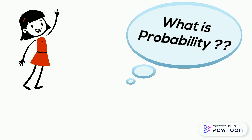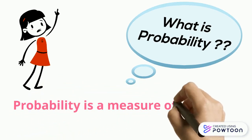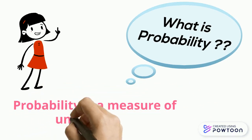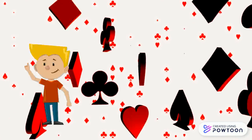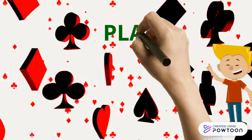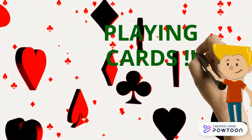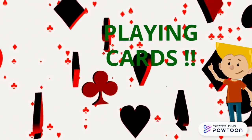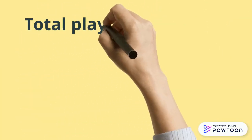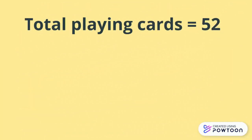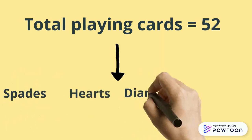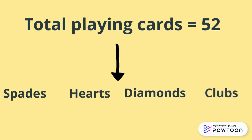Probability is a measure of uncertainty. Let us first understand the tricks related to playing cards. A deck of playing cards consists of 52 cards which are divided into 4 suits: spades, hearts, diamonds and clubs.